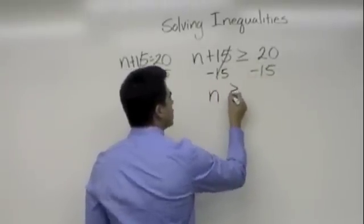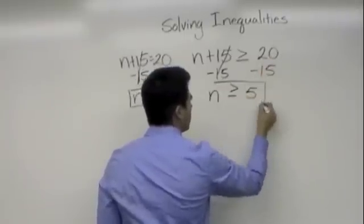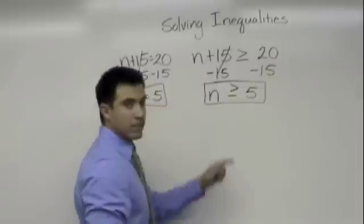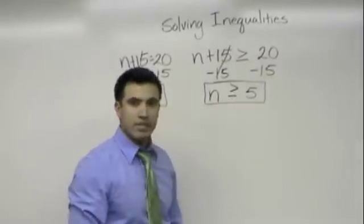Well, n is greater than or equal to 20 minus 15 which is 5. We have our inequality on the left-hand side and n is greater than or equal to 5. Okay, what can we do? Go ahead.